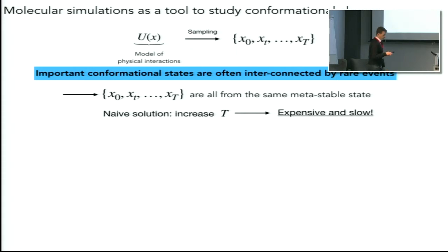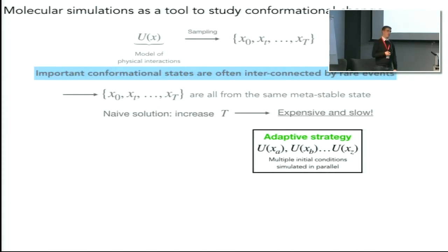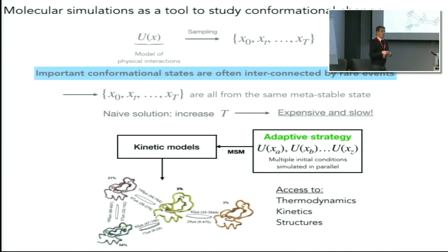A few years ago an adaptive sampling strategy gained a lot of popularity where the idea is that we start from a lot of different initial conditions with different initial momenta and configurations, and we sample multiple simulations in parallel. Then we use a machine learning approach to reconstruct a kinetic model.